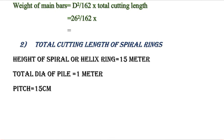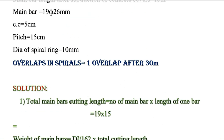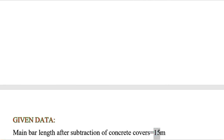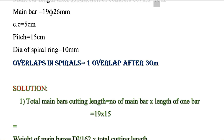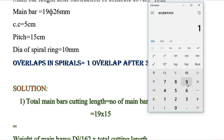Let's begin the solution. First, we calculate the total main bar cutting length. Formula: number of main bars × length of one main bar. Total number of main bars is 19, and length of one main bar is 15 meter. So: 19 × 15 = 285 meter.